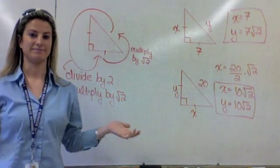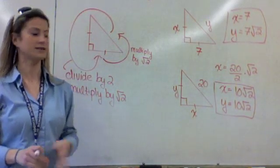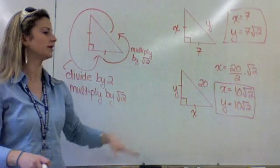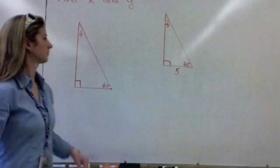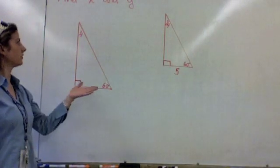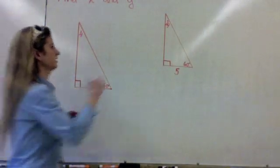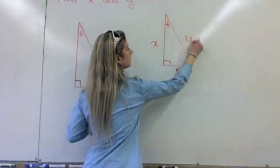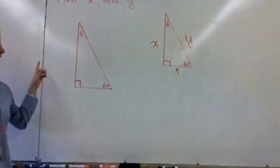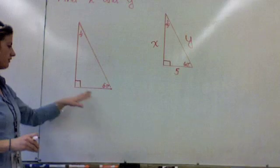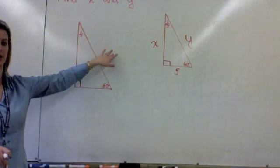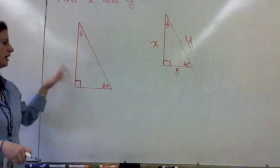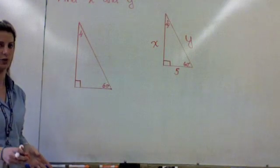Just practice, practice, practice — make up your own numbers, make sure you can do it, and you'll do great on the test. Now we're going to talk about 30-60-90. We talked about the tricks if we're given the short leg — how do we find the long leg, how do we find the hypotenuse? Or if we're given the hypotenuse, how do we get the short leg, the long leg, and every possible combination.